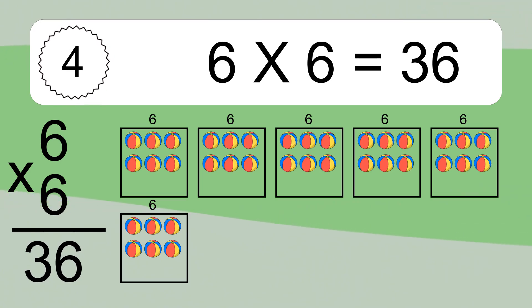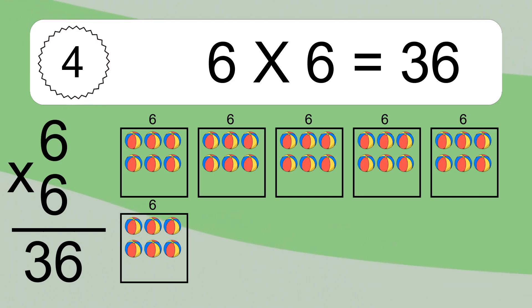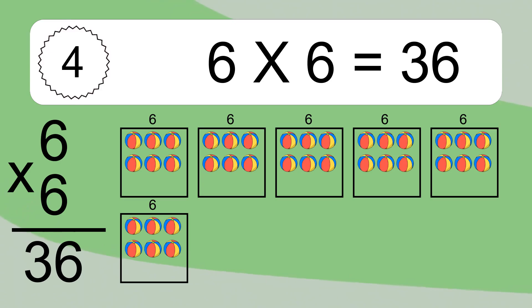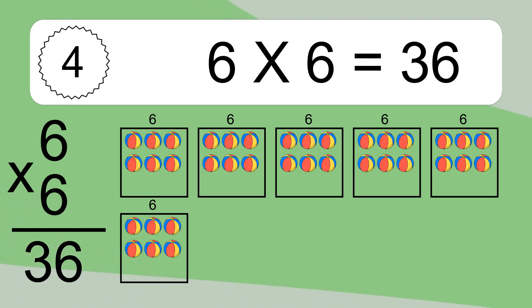We have 6 boxes, and each box has 6 colorful balls inside. If you count all the balls in all the boxes together, you will have 6 times 6 balls. This equals 36 balls.